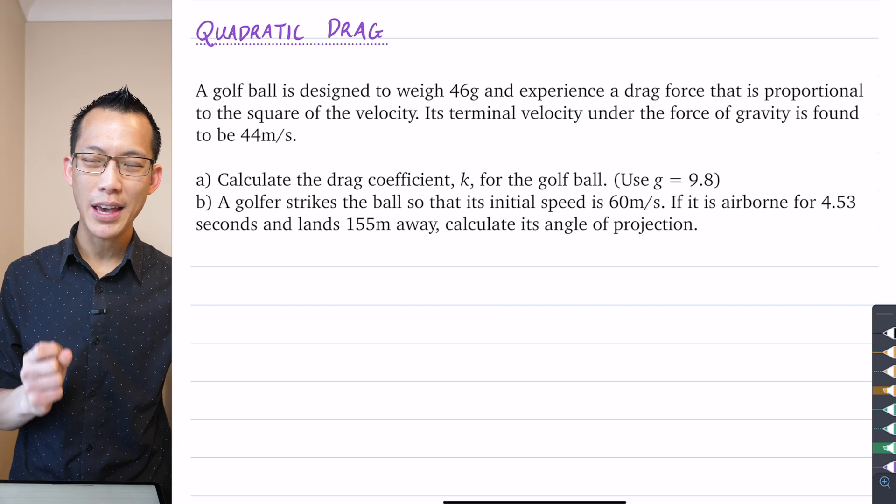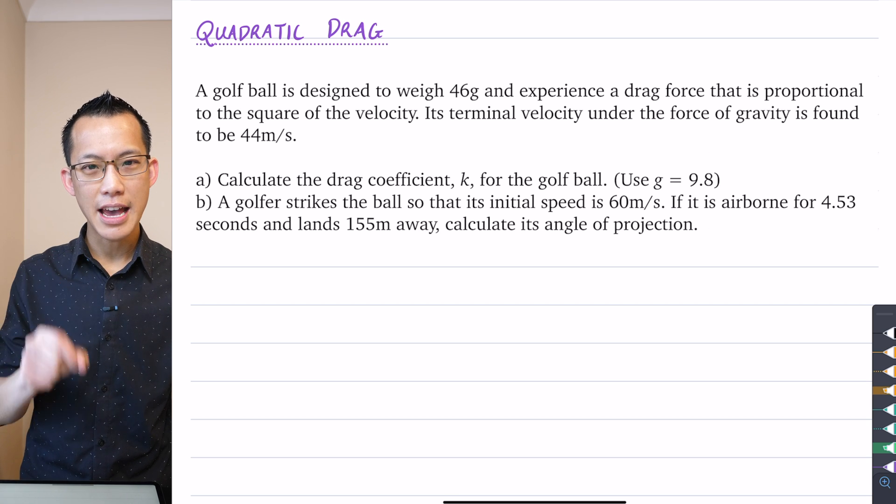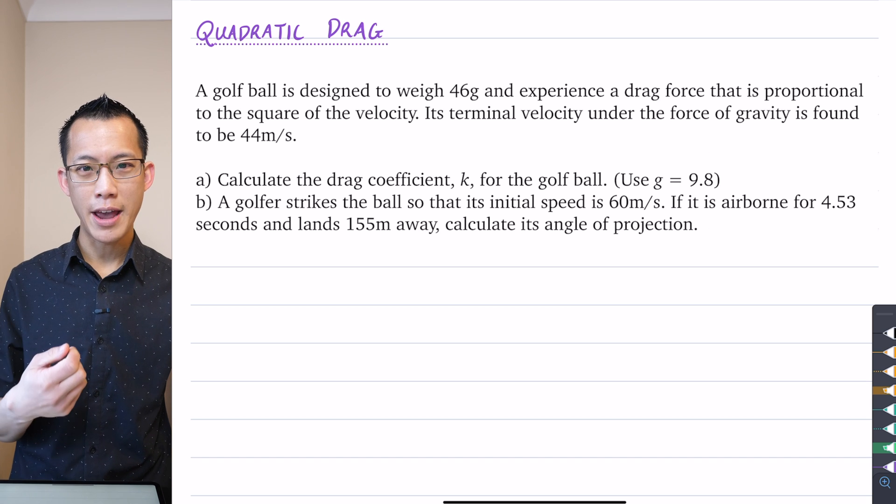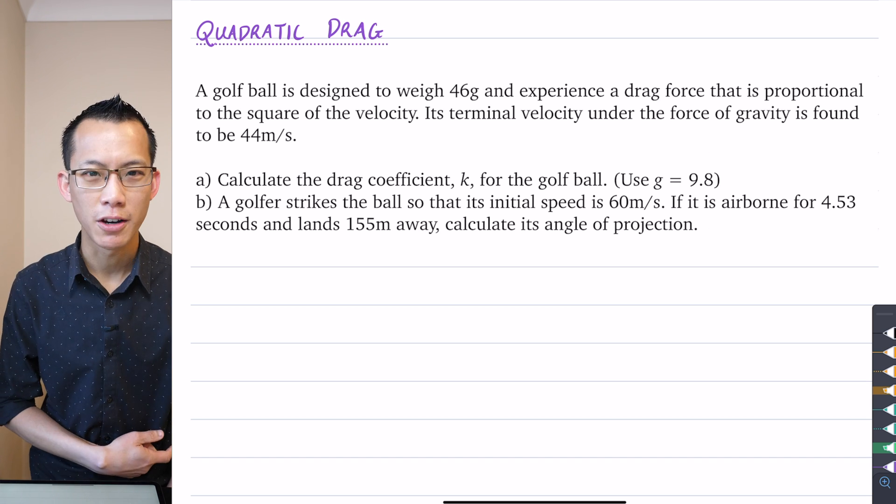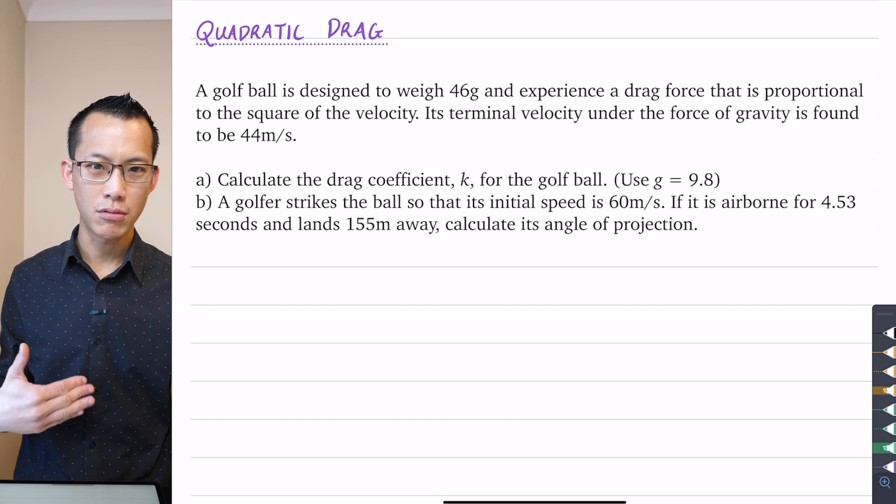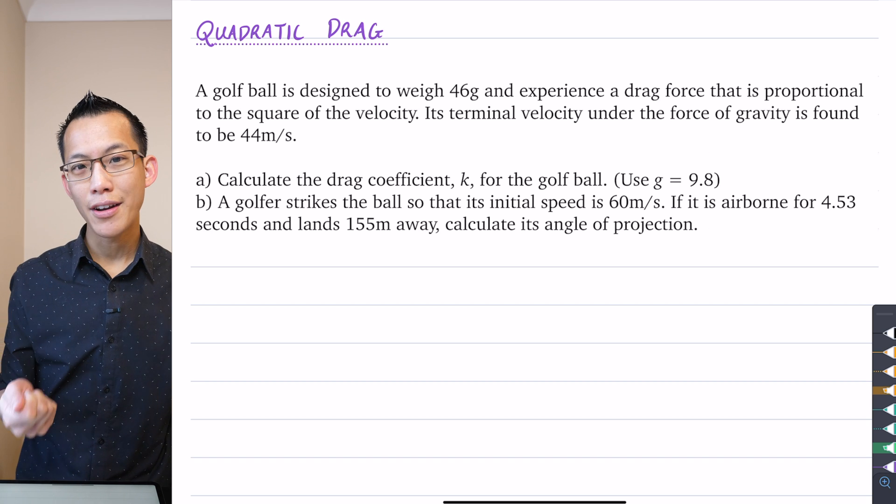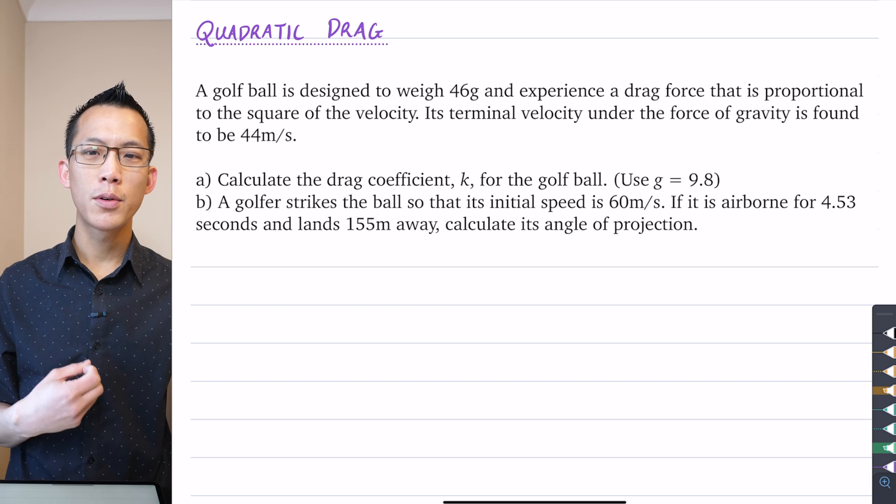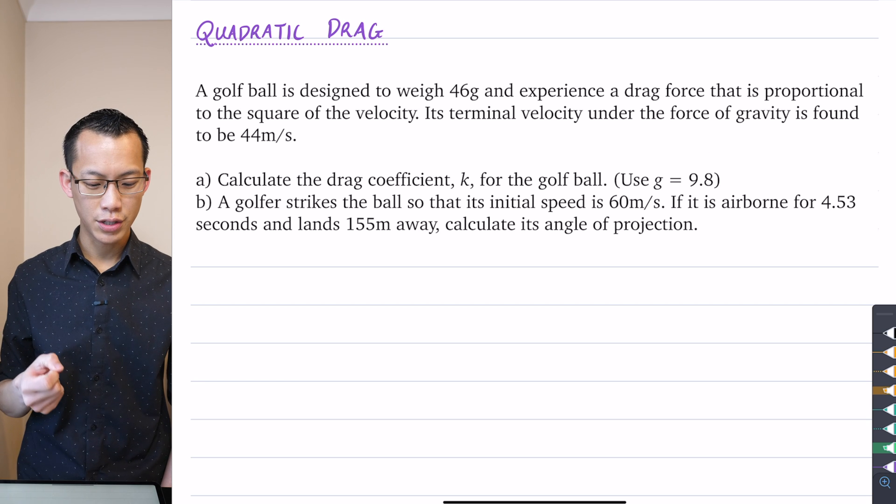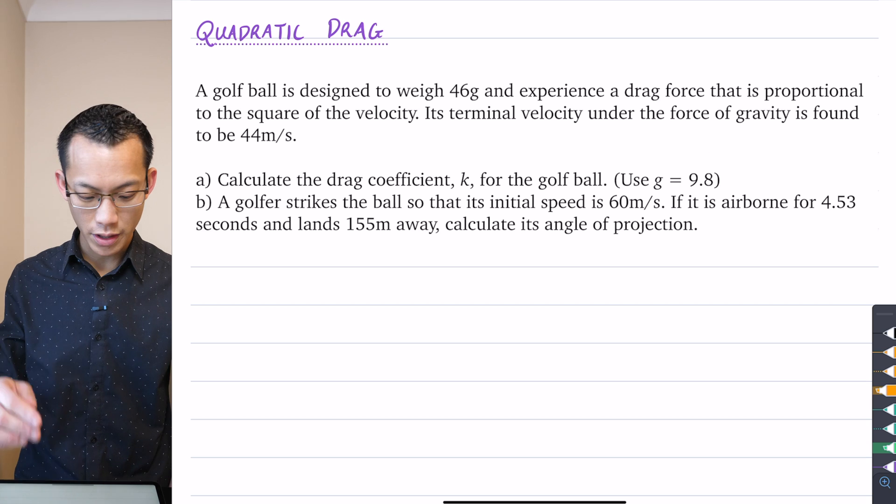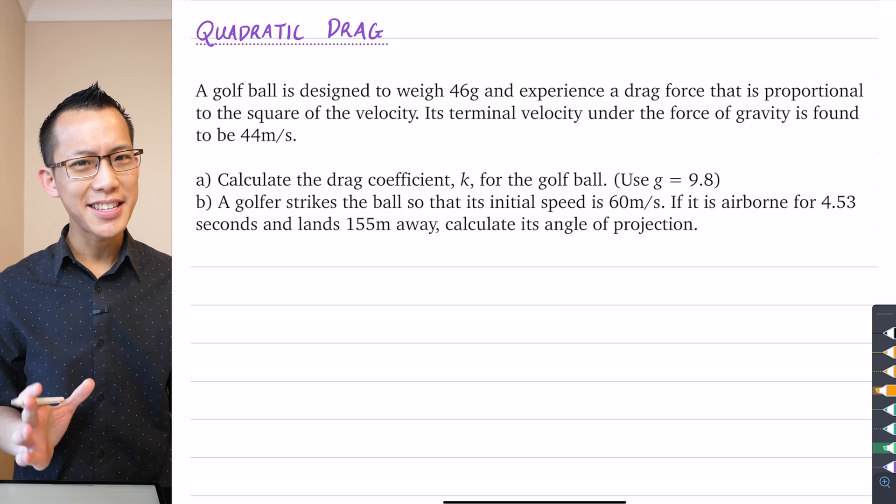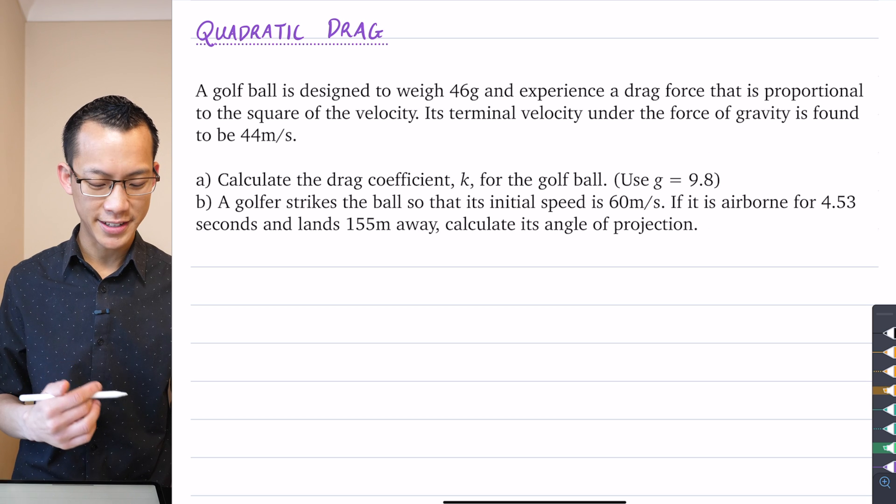You might recall we looked at situations where aerodynamic drag would be directly proportional to velocity, so x double dot equals minus k x dot. Vertically you also have to account for gravity. One thing we said was you might not have it proportional to velocity, you might be proportional to the square of velocity. That's what's being highlighted in this particular question - quadratic drag. Let's highlight the things that are different about this question.